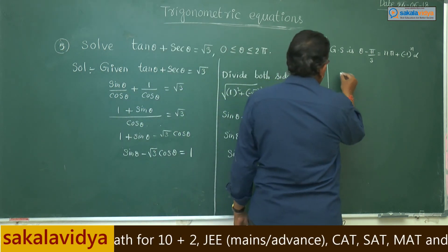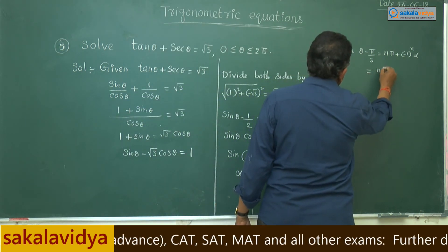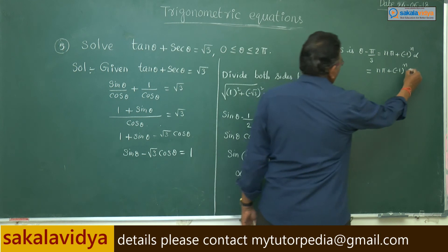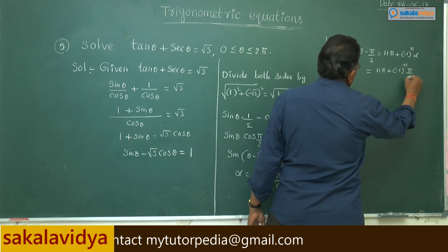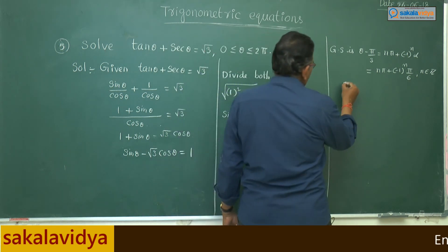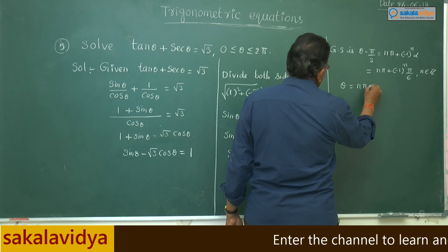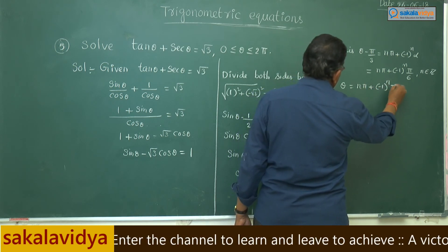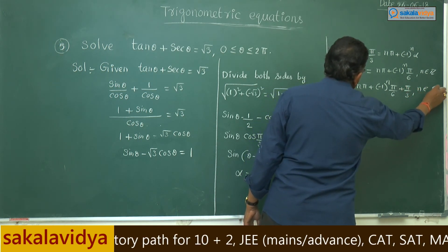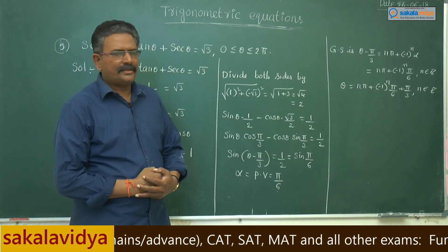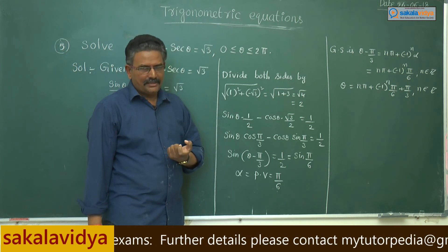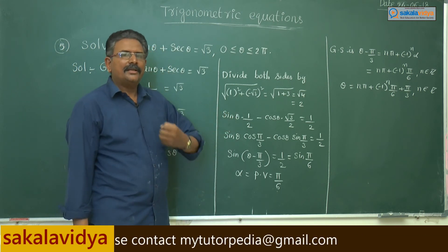The general solution is theta minus π/3 equals nπ plus minus 1 to the power of n times alpha, where alpha equals π/6. So this equals nπ plus minus 1 to the power of n times π/6, where n belongs to integers. Therefore, theta equals nπ plus minus 1 to the power of n times π/6 plus π/3. This is the general solution, but here we are asked for specific solutions in the interval [0, 2π].